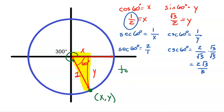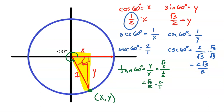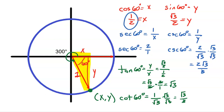What about cotangent? First, tangent of 60 degrees is y divided by x — that's (√3/2) divided by (1/2). Dividing by 1/2 means multiplying by the reciprocal 2, so the 2s reduce and I get √3. So cotangent of 60 degrees, being the reciprocal of tangent, is 1 over √3. Rationalizing by multiplying top and bottom by √3 gives √3 over 3.